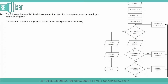Question number 14. The following flowchart is intended to represent an algorithm in which numbers that are input cannot be negative — only positive numbers are supposed to be input. The flowchart contains a logic error that will affect the algorithm's functionality. Let's look at what the algorithm is actually doing.